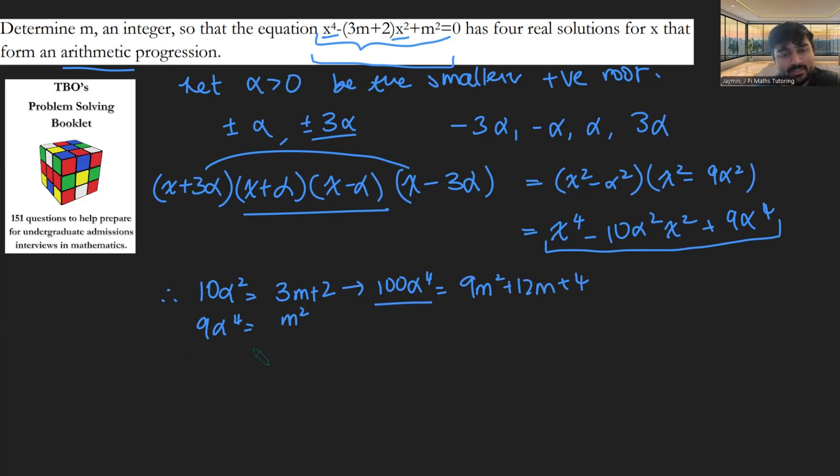So let's maybe square the first equation to give us 100α^4 = 9m^2 + 12m + 4. And then maybe just divide this and this together to give us 100/9 because the α^4s cancel equals (9m^2 + 12m + 4)/m^2. And so if I rearrange this, cross multiply, bring everything to one side, I get 19m^2 - 108m - 36 = 0.